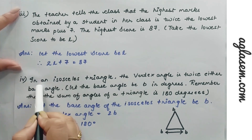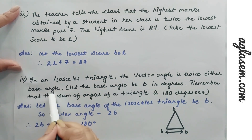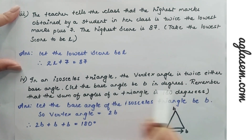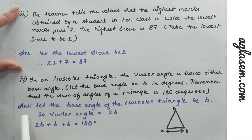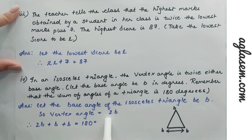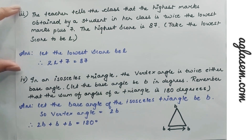The last case: in an isosceles triangle, the vertex angle is twice either base angle. Let the base angle be b degrees. Remembering that the sum of angles of a triangle is 180 degrees, and the vertex angle equals 2b, the equation is 2b + b + b = 180°. So this was all for Exercise 4.1.